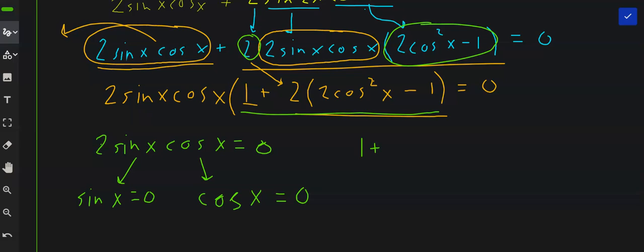So 1 plus, that would be 4 cosine squared x minus 2 equals 0. And you can add like terms. That would be 4 cosine squared. If you add a 1 and a negative 2 together, that's negative 1 on this side. But then when you take that step to the other side, it becomes a positive 1.